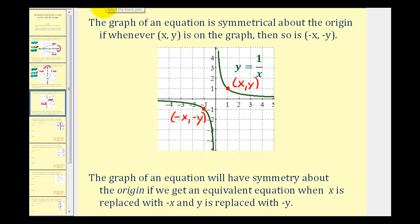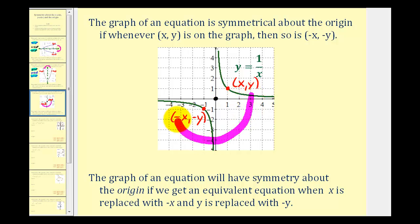The visual test for symmetry about the origin is a little bit trickier. It's often called the rotational test, which means we're going to rotate this graph about the origin. If we can rotate this graph anything less than one complete turn and it would look exactly the same, it would have symmetry about the origin. For example, if we rotated this graph one half turn, or 180 degrees, notice how it would look exactly the same, because the piece in the first quadrant would move to the third quadrant, and the piece in the third quadrant would move to the first quadrant.